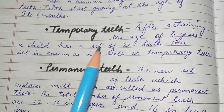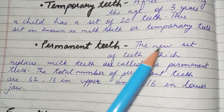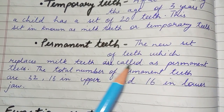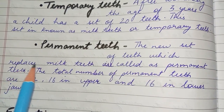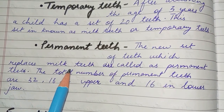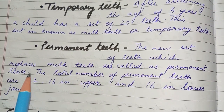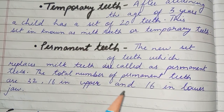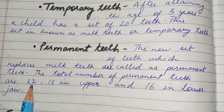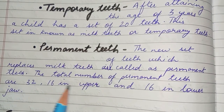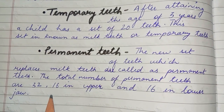The next topic is permanent teeth. The new set of teeth which replaces milk teeth are called permanent teeth. The total number of permanent teeth is 32 — 16 in the upper jaw and 16 in the lower jaw.